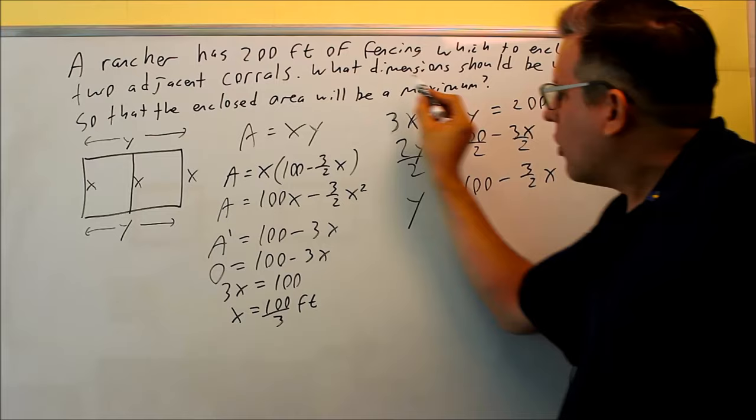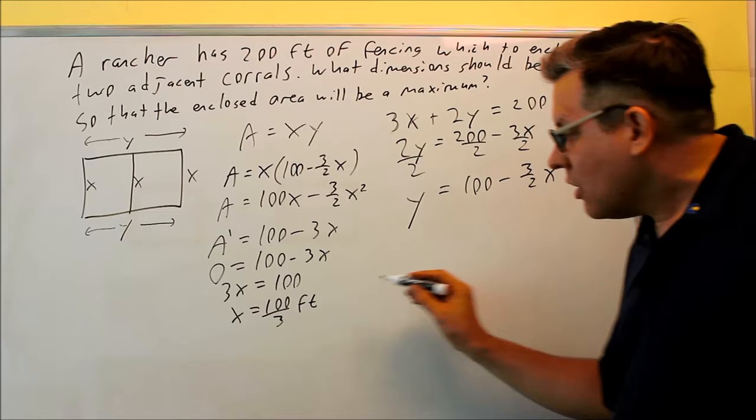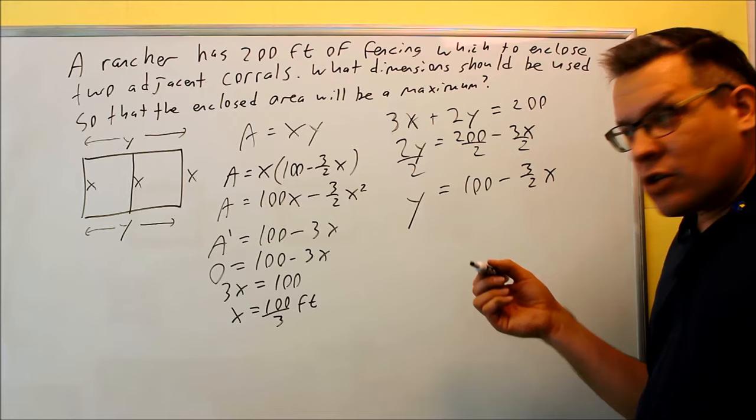Let's read the question. It says, what dimension should be used so the enclosed area will be a maximum? It's only asking for dimensions in this case. It's not asking for the actual area. So, here's the first answer, 100 thirds. Now, we have to find also the other dimension.